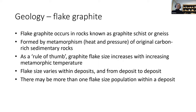Let's look at the geology, focusing on flake graphite since that is the one most of us are likely to be involved with. Flake graphite occurs in rocks known as graphite schist or gneiss, typically formed by metamorphism of original carbon-rich sedimentary rocks. As a rule of thumb, graphite flake size increases with increasing metamorphic temperature, and the flake size varies within deposits and between deposits. There may be more than one flake size population within a single deposit.